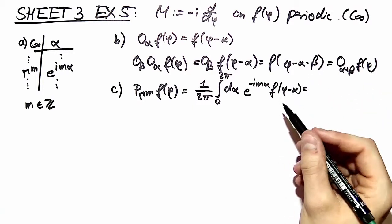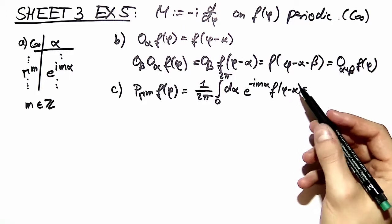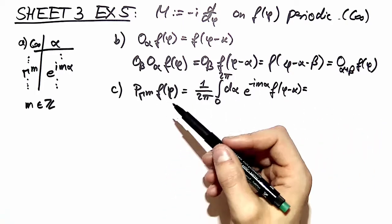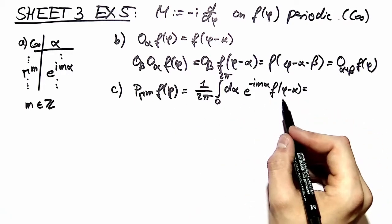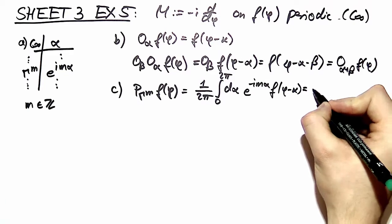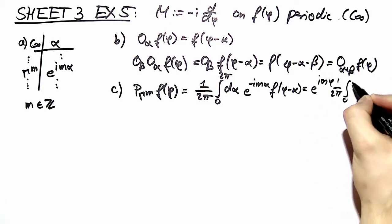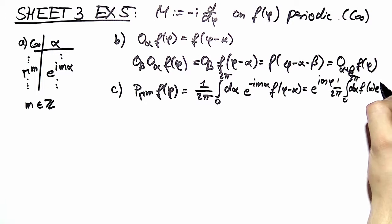Now it's good to keep in mind what do you want to have? What do we want to end up with? We want to end up with a function dependent on phi. So it should be useful to perform a variable substitution and take out our e to the im phi. And end up with an integral 0 to 2 pi d alpha f of alpha e to the im alpha.